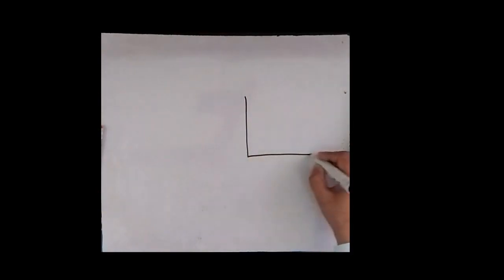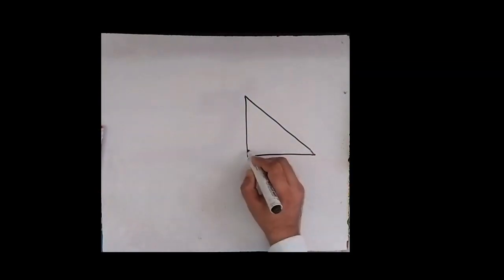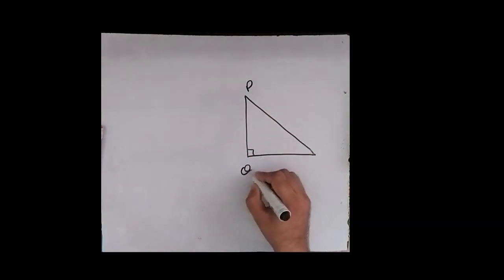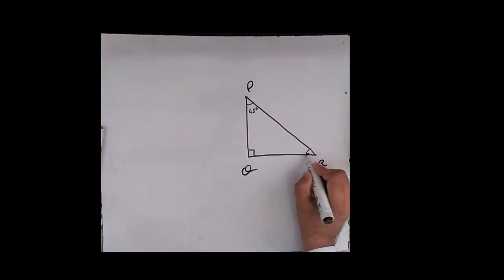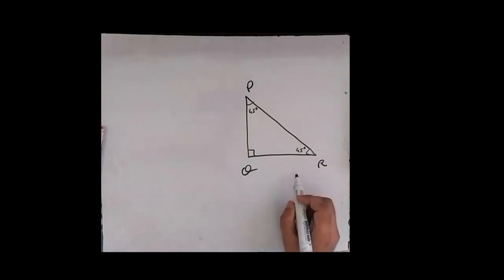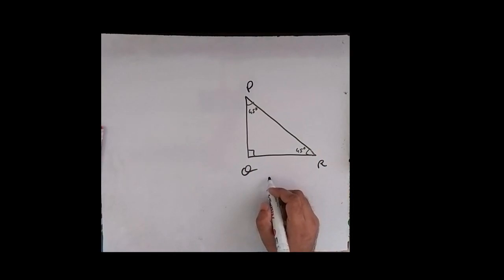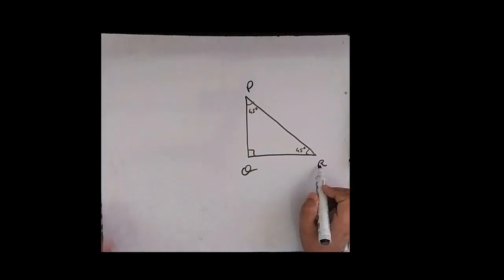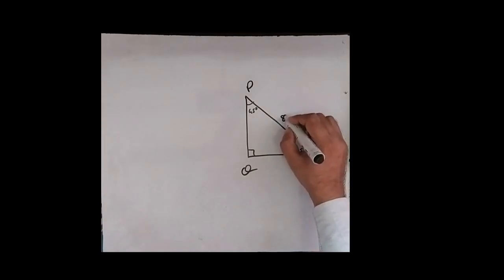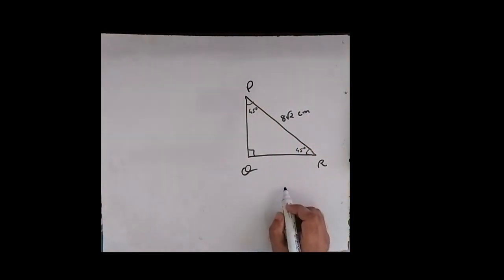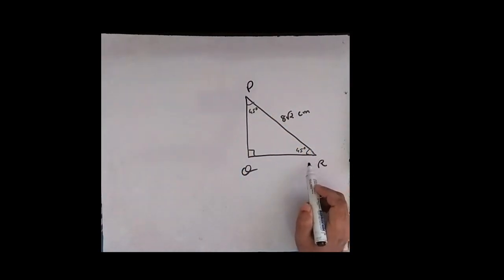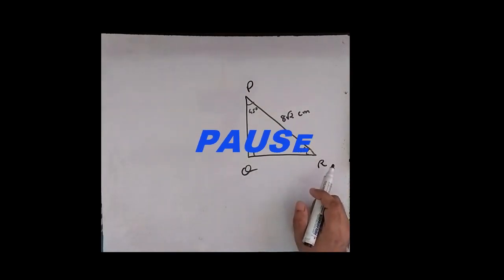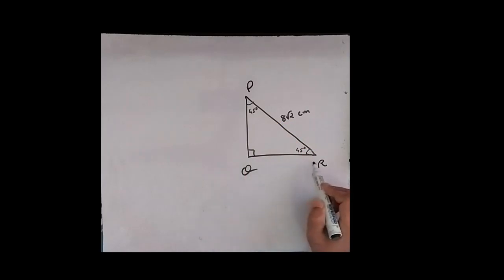Now I am drawing a 45-45-90 triangle — triangle PQR — where angle Q is 90 degrees, angle P is 45 degrees, and angle R is also 45 degrees. So triangle PQR is a 45-45-90 triangle. The hypotenuse PR is given as 8√2 centimetres. Now, pause this video for a while and think: what will be the length of PQ and the length of QR?